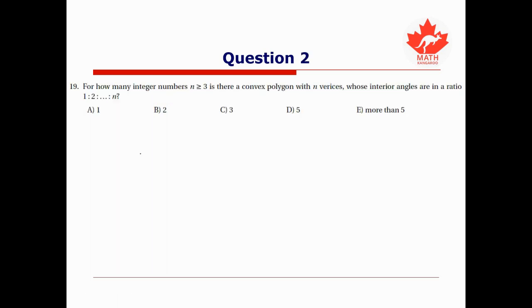For this next question, we're asked, for how many integer numbers n greater than or equal to 3, is there a convex polygon with n vertices whose interior angles are in a ratio of 1 to 2 to dot dot dot all the way up to n?